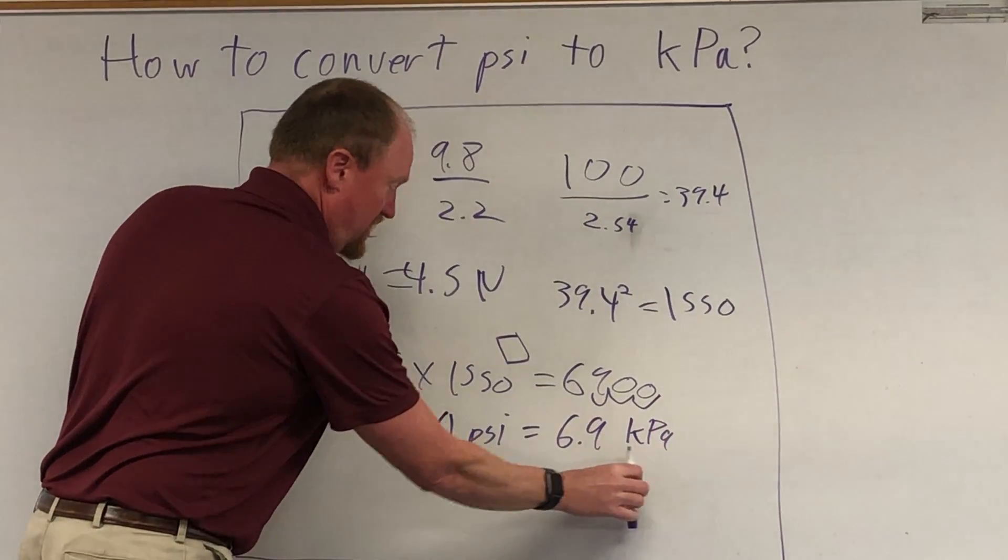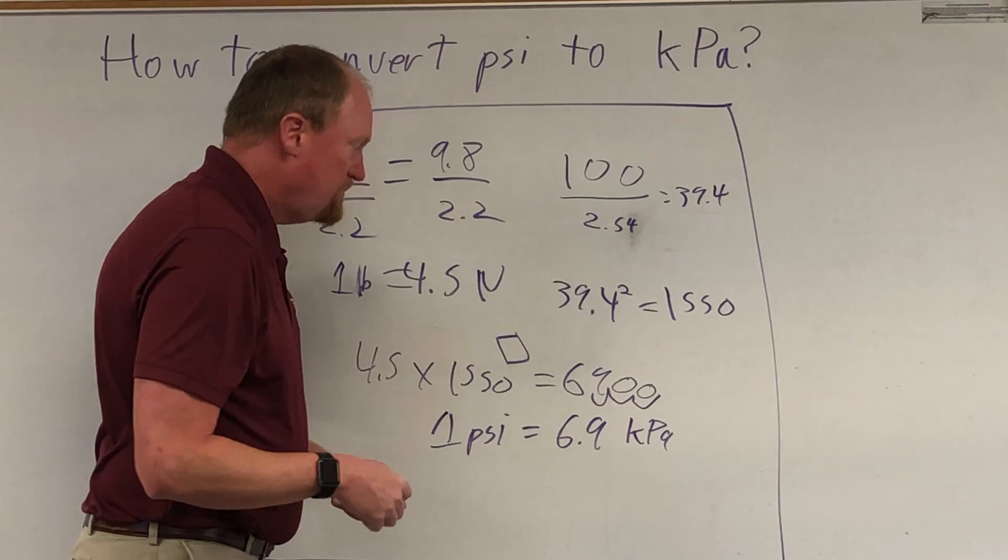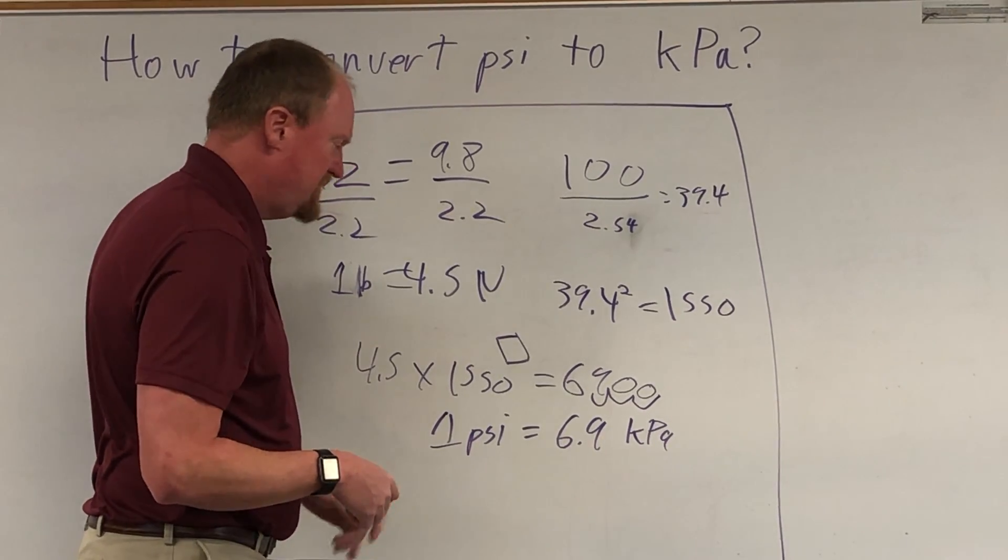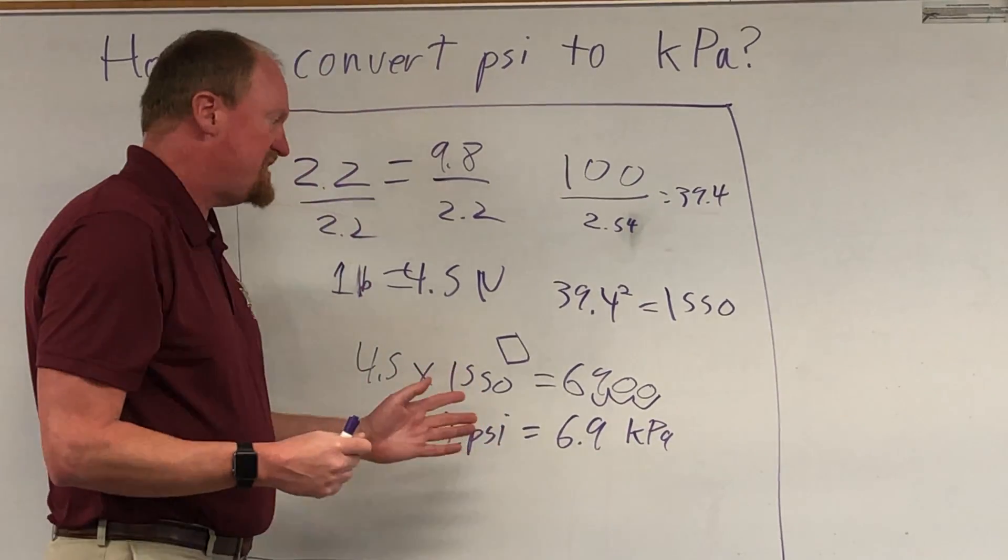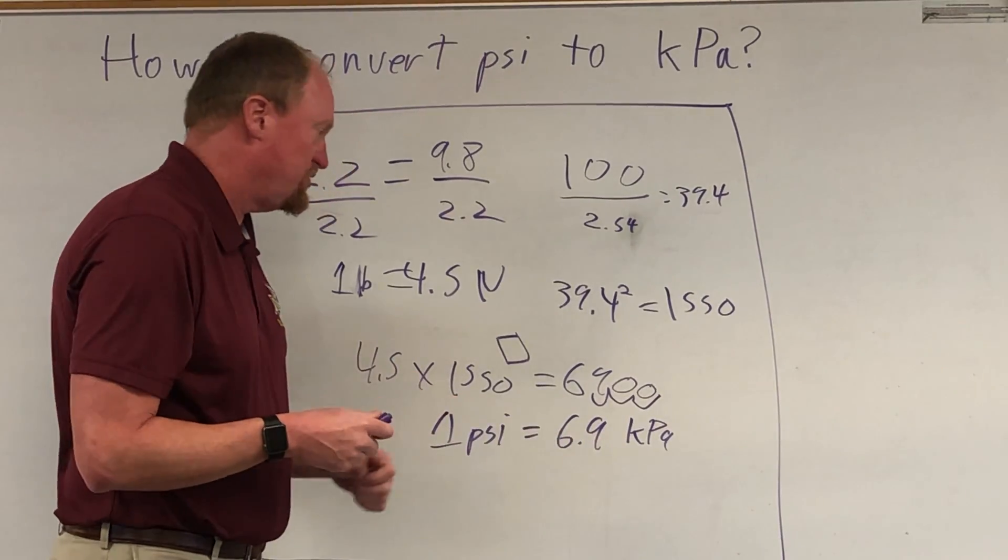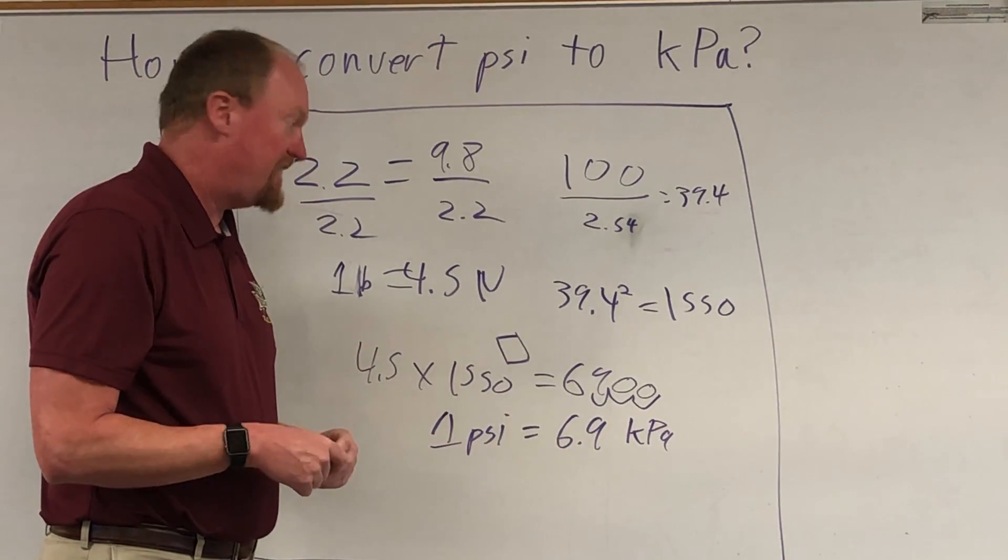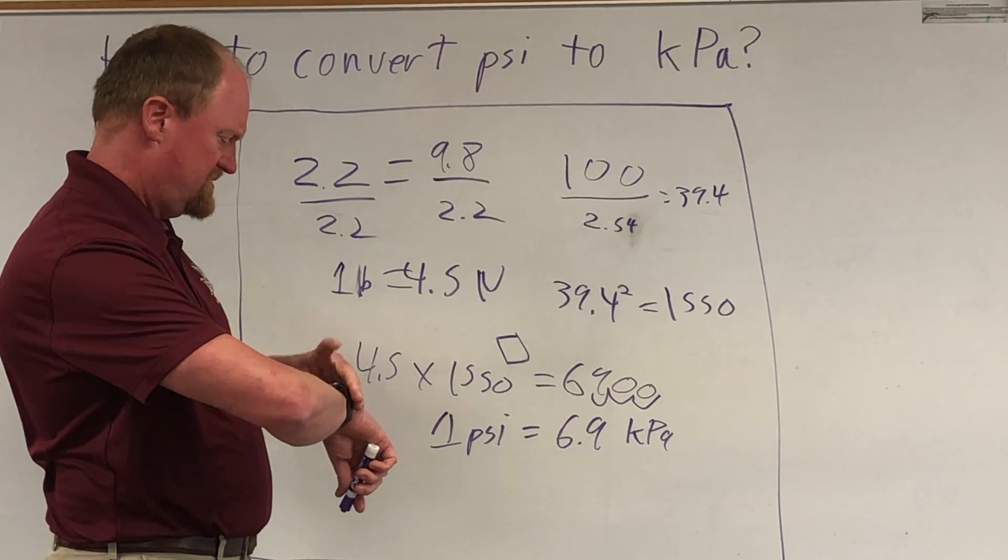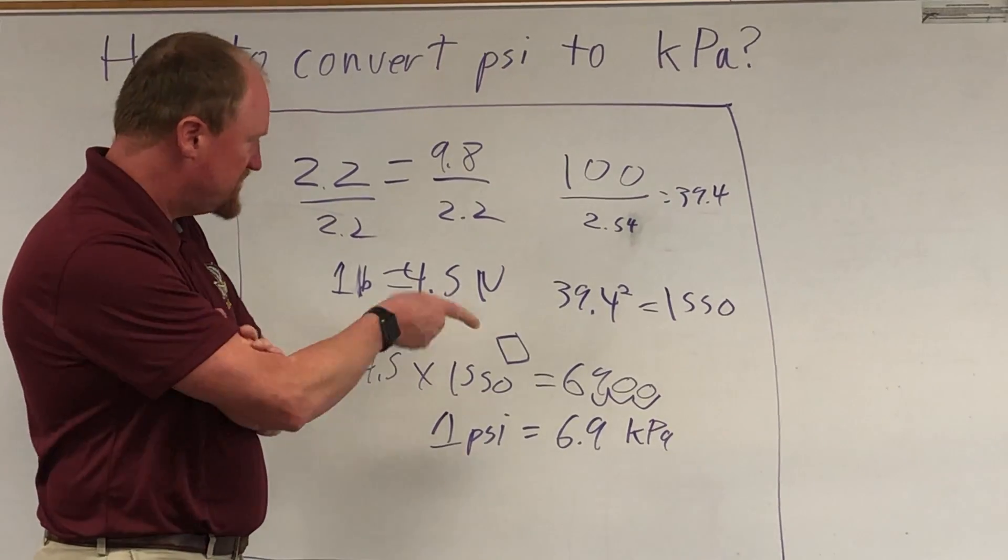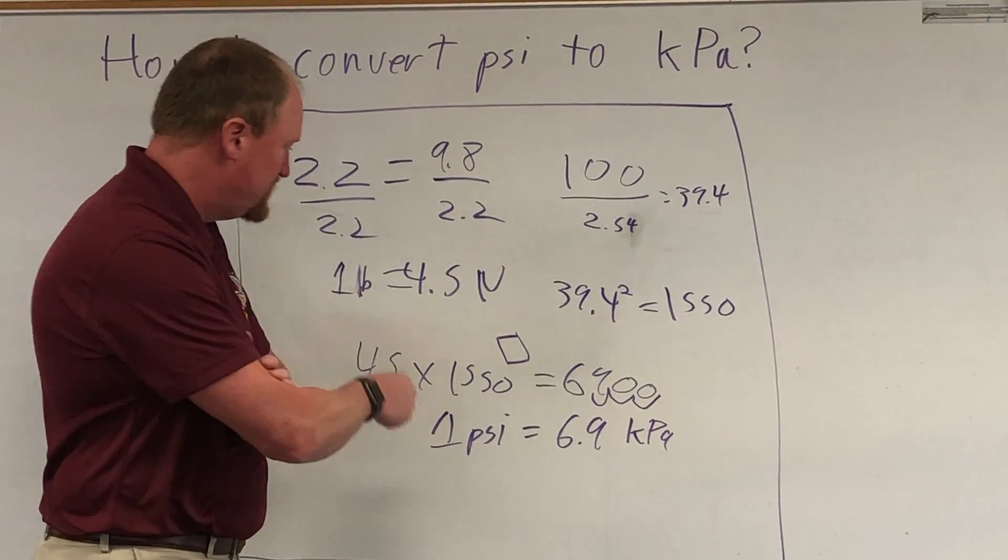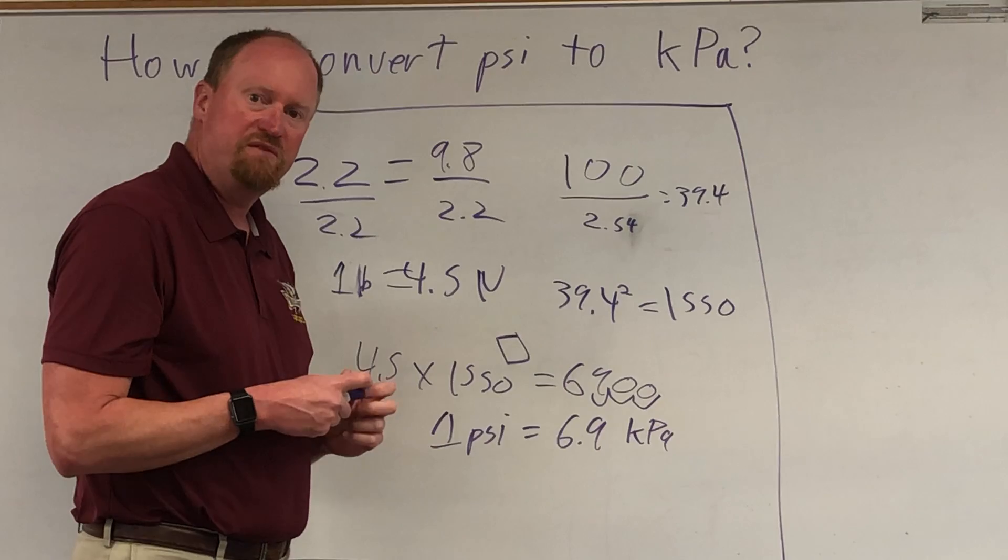So if you're converting psi to kilopascals, you need to multiply by 6.9. 1 psi, you need to multiply by 6.9 to convert that to kilopascals. If you want to go from kilopascals to psi, you've got to divide by 6.9. Is that right? I'm just trying to make sure I got that right. Yes, because 1 psi is bigger than a kilopascal, so yeah, you need to multiply by that because you need more of them, because a psi is bigger than a kilopascal.